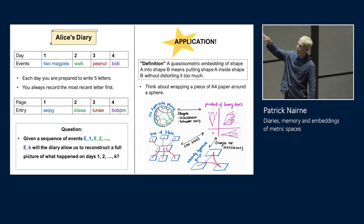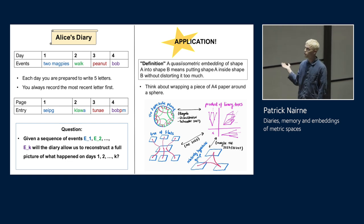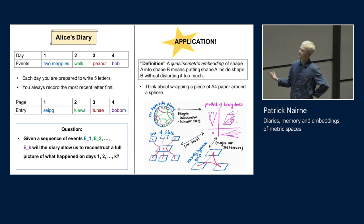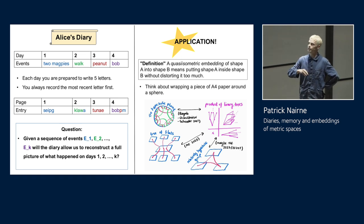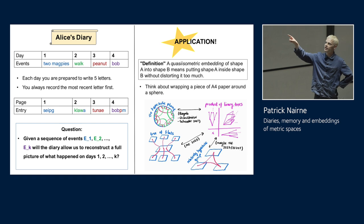We have four days and on those four days there's four events. So on day one, say, you see two magpies. On day two, you go for a walk. On day three, you eat a peanut. And on day four, you meet your friend Bob. Now, you're not in this hypothetical setup the most motivated person. So at the end of each day, you're prepared to write five letters in your diary. And you're going to write your diary in this slightly strange way, which is that you're always going to record the most recent letter first. So here's what you write. On day one, you write Zipk, because it's the end of magpies - it's the five letters at the end of magpies written backwards. On day two, you write Clower. So that's walk backwards, then the A from magpies. On day three, you write Tune, which is the end of Peanut. And on day four, you write Bob and then the P from Peanut and then the M from magpies.